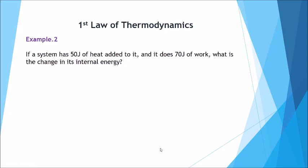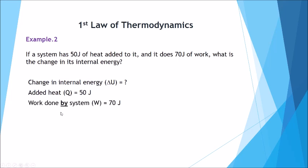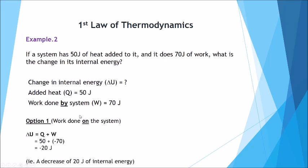Example number two. If a system has 50 joules of heat added to it and it does 70 joules of work, what's the change of its internal energy? Again we set out our unknown and write down the variables that we do have. The heat added is 50 joules and the work done by the system is 70 joules.